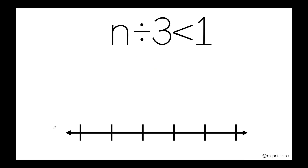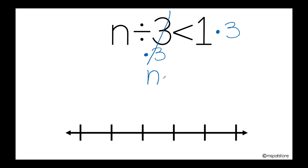Now I would like you to analyze this inequality, pause the video, and try to do it by yourself. As you can see, we have this 3 that is dividing on the side of the variable, and it shouldn't be. The inverse operation of division is multiplication. So I'm going to multiply by 3 here and also multiply by 3 here. I'm multiplying by positive 3, because this is positive 3. Now I cancel these out, and I have n is less than positive 3, because 1 times positive 3 is positive 3.